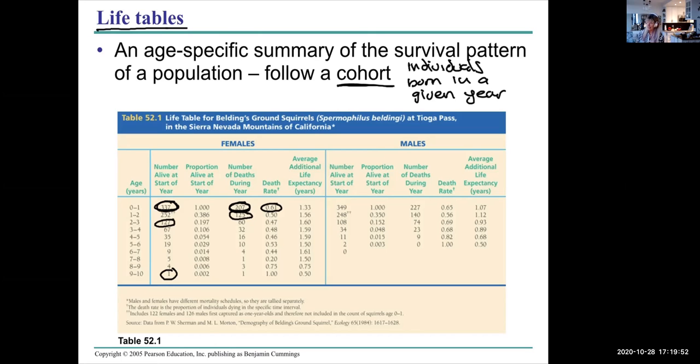You go through the different ages, you follow this cohort for an entire 10 years. A lot of population studies tend to be long-term studies because a lot of species live a long time. If you were to study elephants, for example, you're looking at 100 or greater year lifespan of an individual, so you would have to collect data for 100 years or longer. That's the females, and then you can also look at the males.